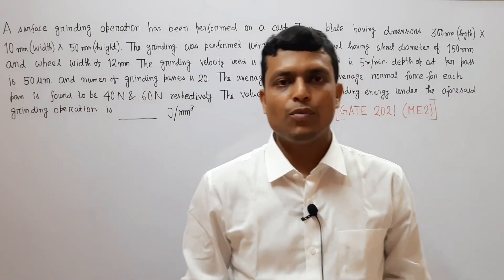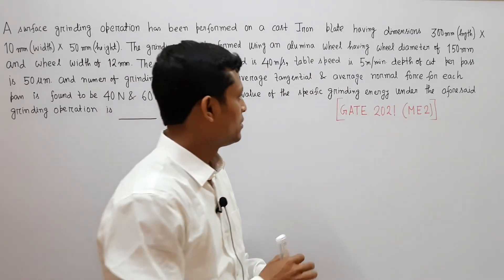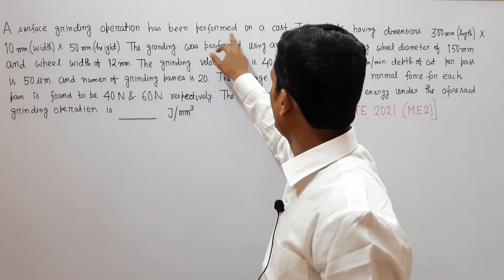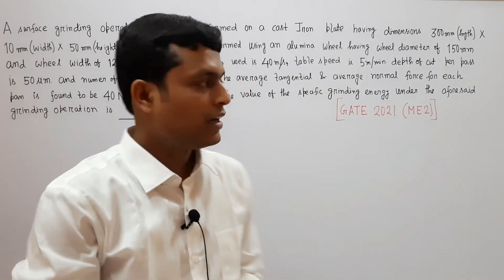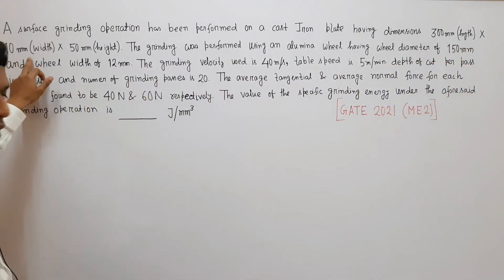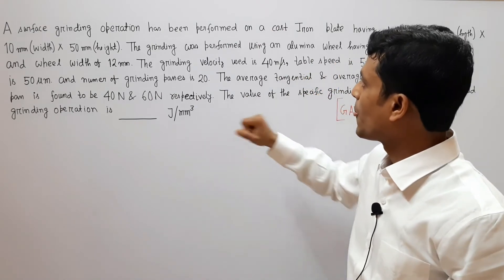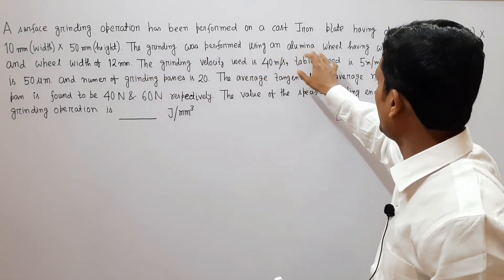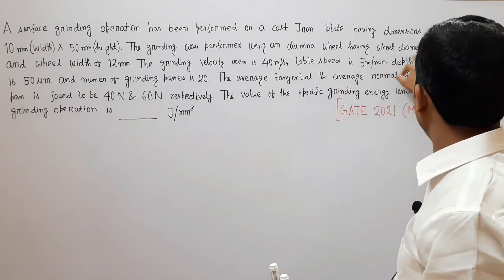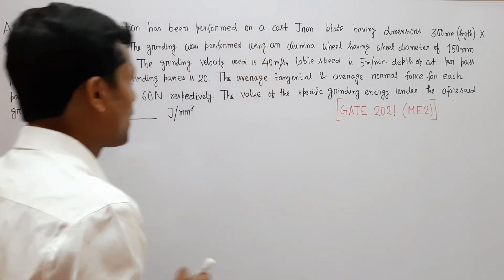Now let us solve another problem from grinding technology. This is also from GATE 2021 set ME2. A surface grinding operation has been performed on a cast iron plate having dimensions 300 millimeter length, 10 millimeter width and 50 millimeter height. So job dimensions are given. The grinding was performed using an alumina wheel.